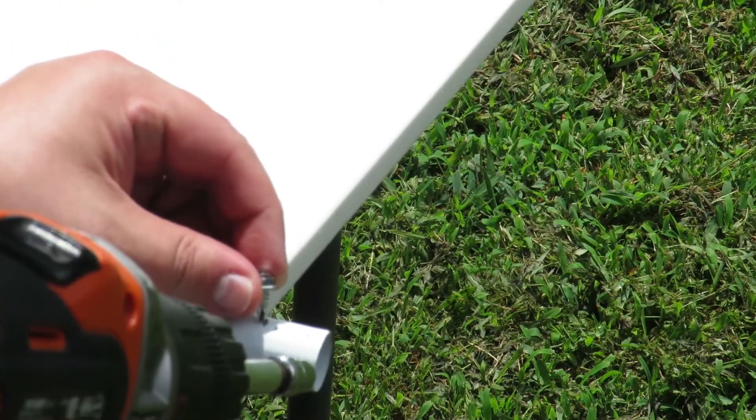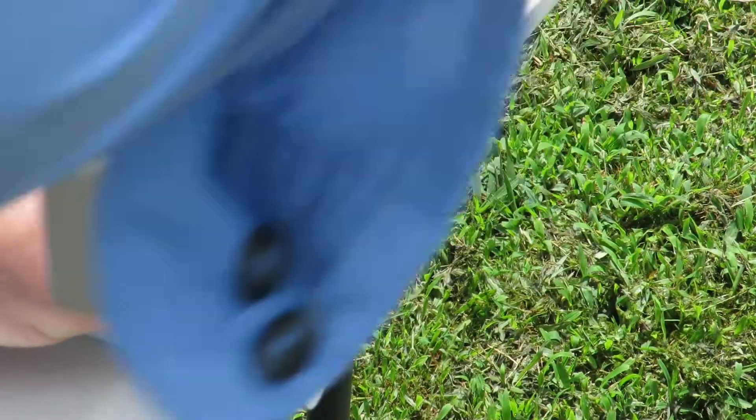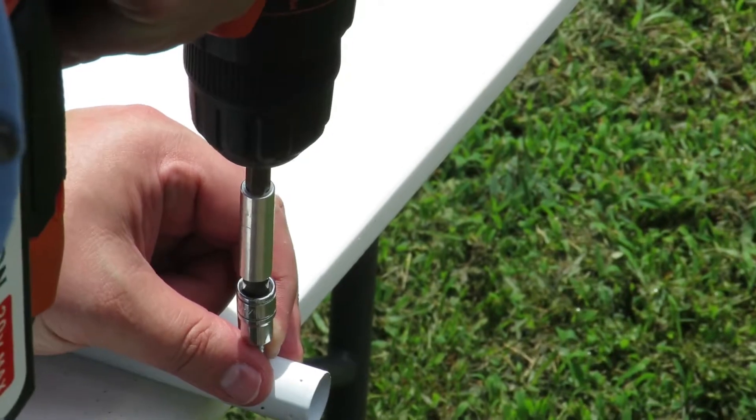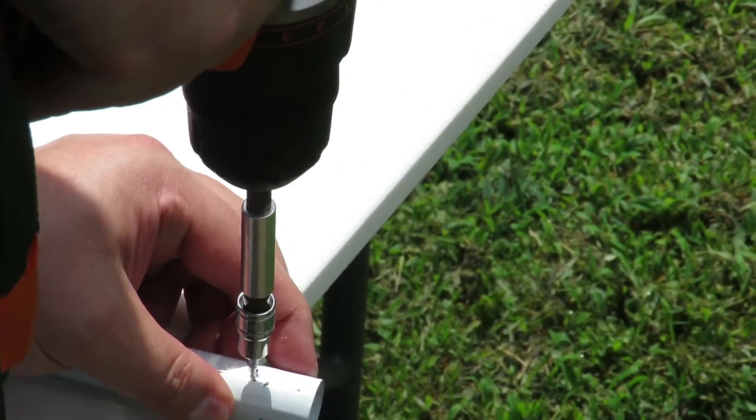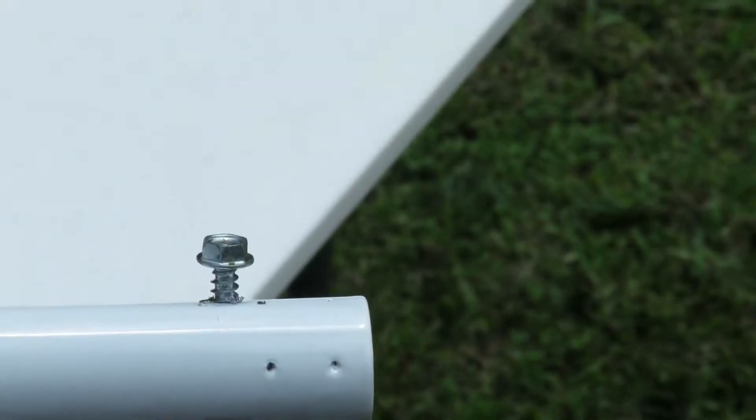Measure 3 1⁄4 inch from the end of each of the three legs and mark with a marker. Screw a self-tapping screw into the pole leaving 1⁄8 inch of the screw sticking out. Do this for all three. Here's what it should look like.